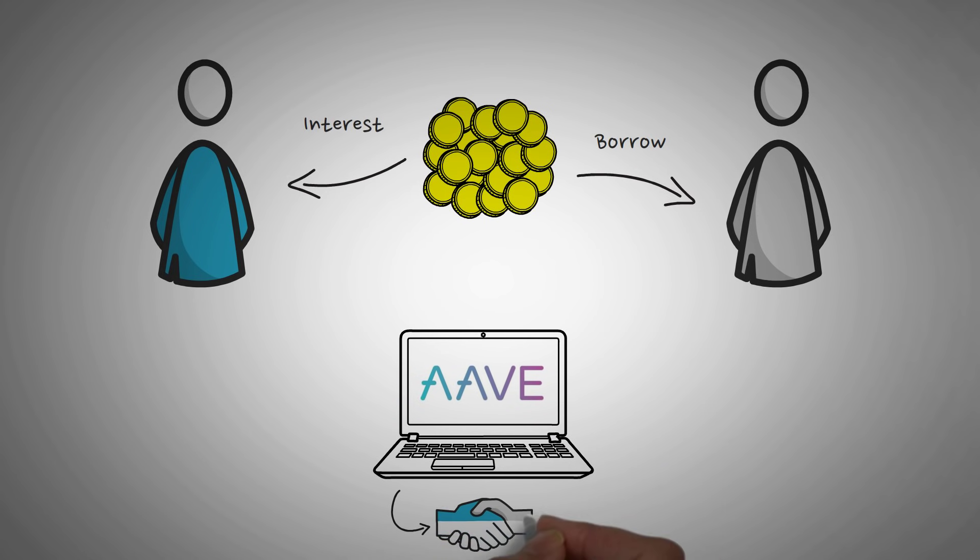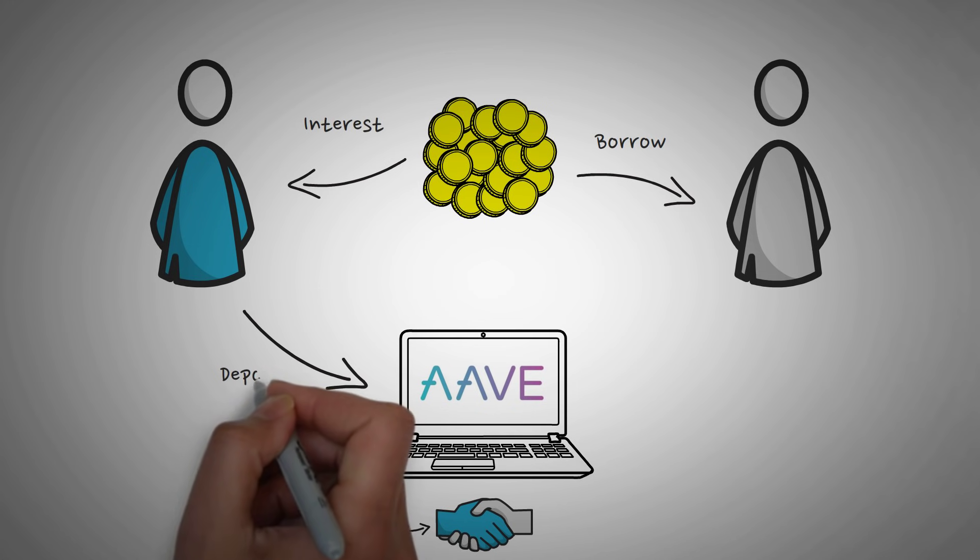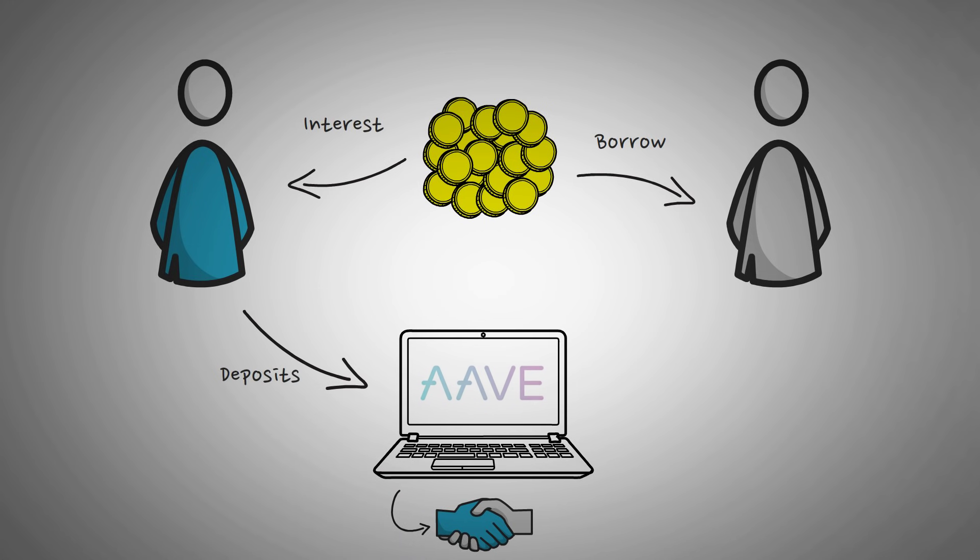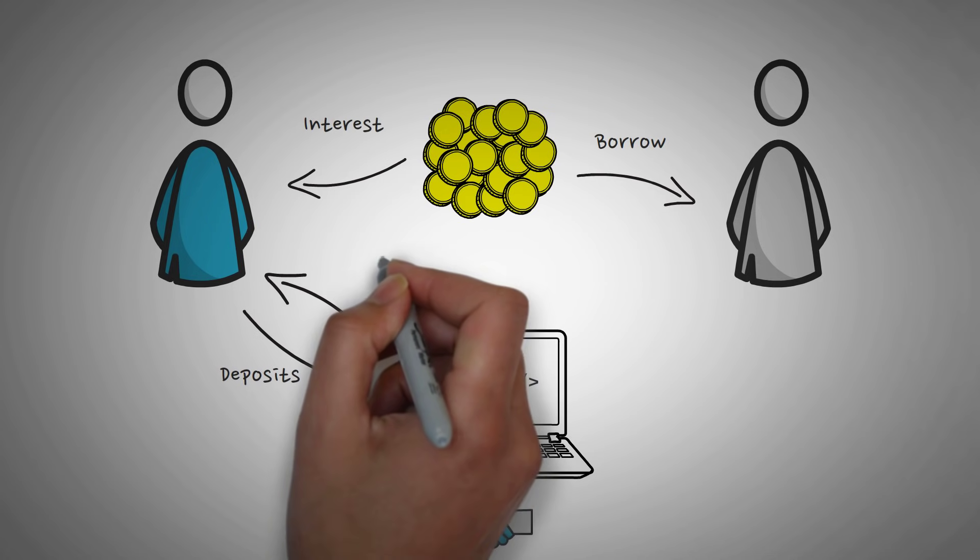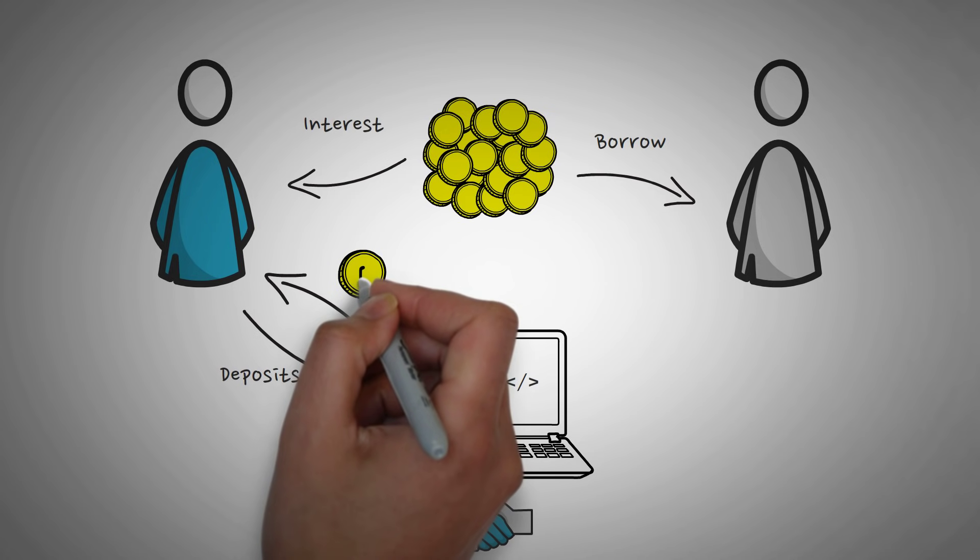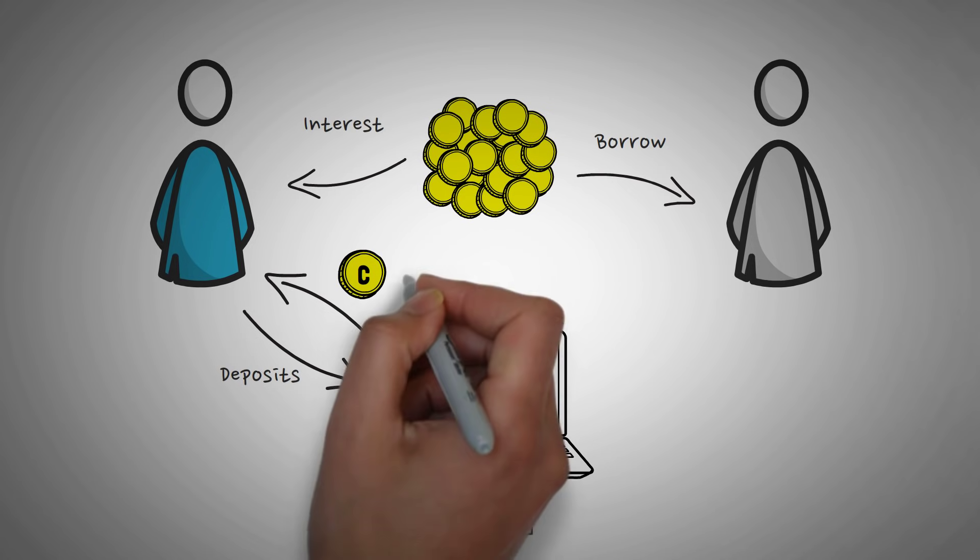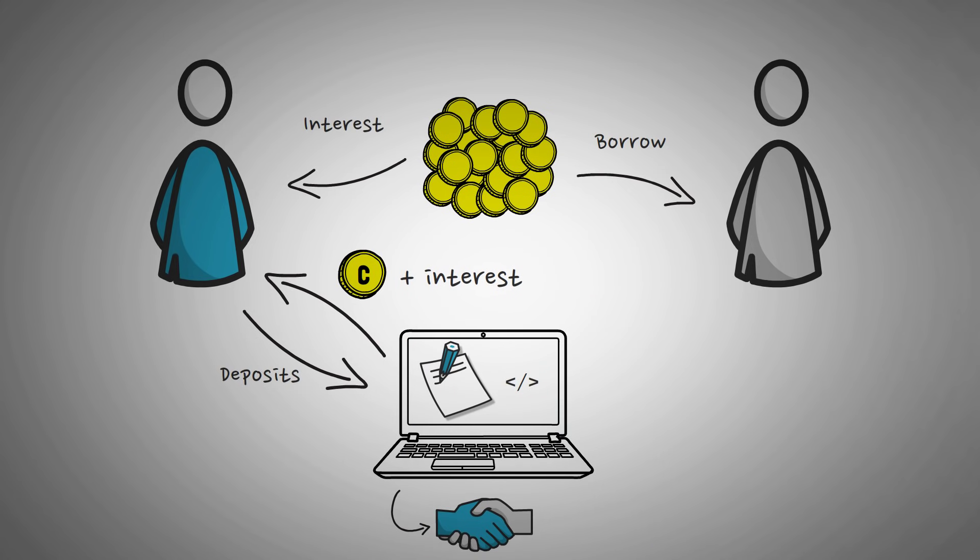So person A goes to Compound or Aave, which are two platforms that allow crypto borrowing and lending. And person A deposits his coins into a smart contract. If you don't know already, smart contracts are just code that run a particular function. In turn, what he gets are called C tokens or A tokens that are a representation of his original coin plus interest.